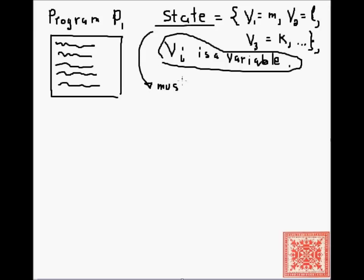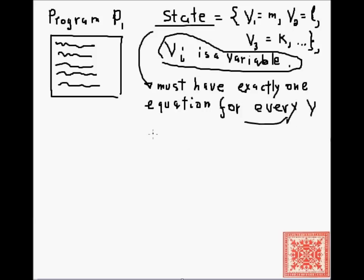To be a legal state of an L program, that set of equations must have exactly one equation for every variable in this program P1. If V is mentioned in the text of the program, then the legal state must have exactly one equation for every variable in P.